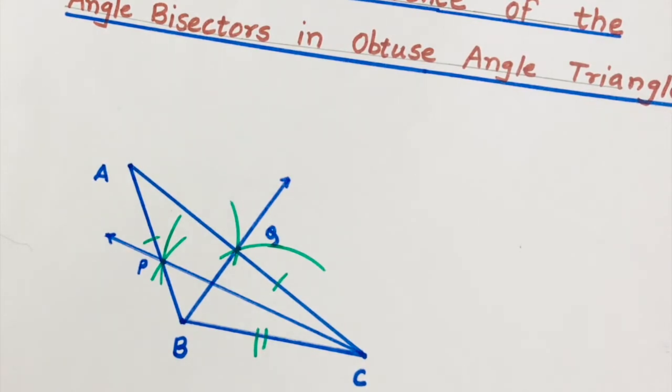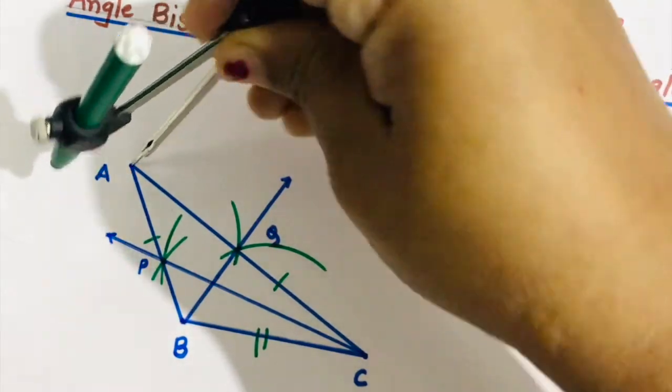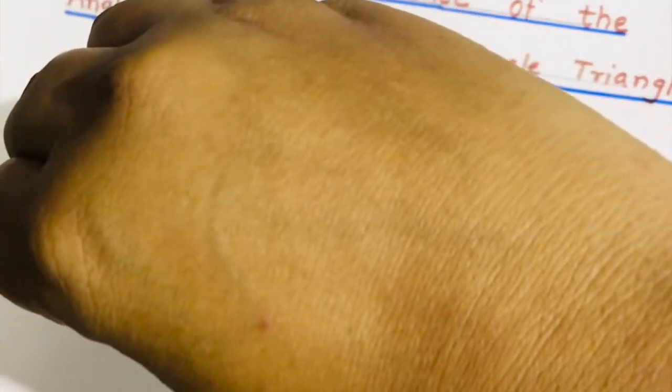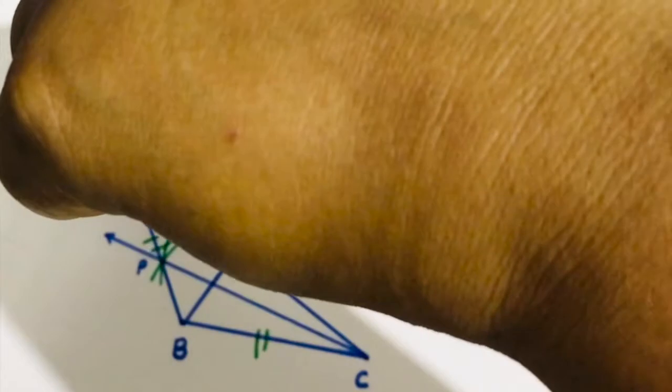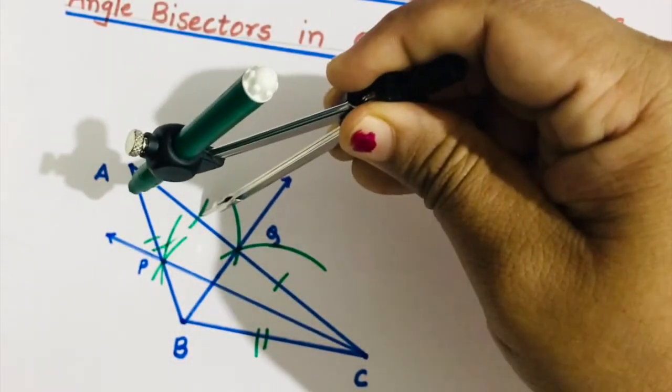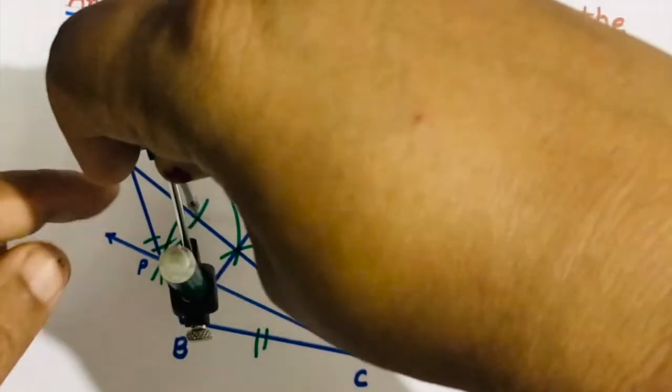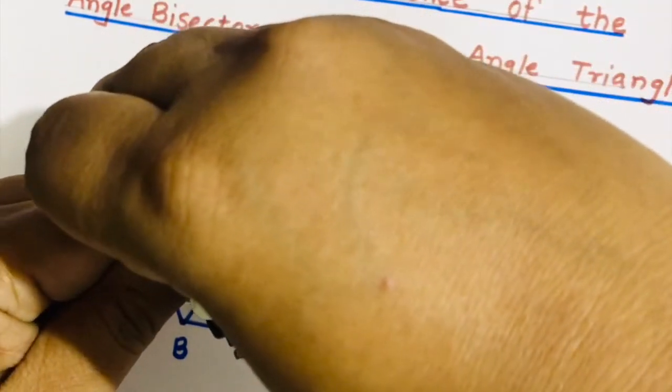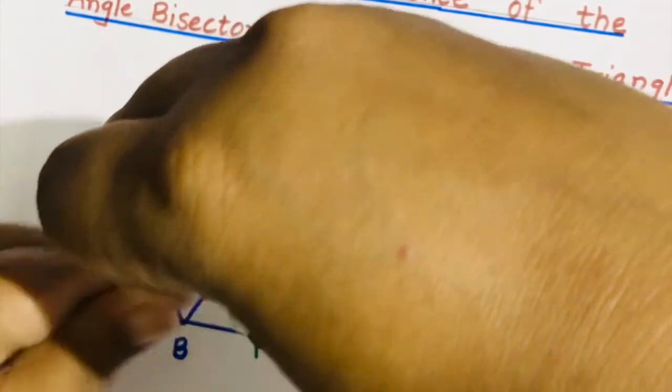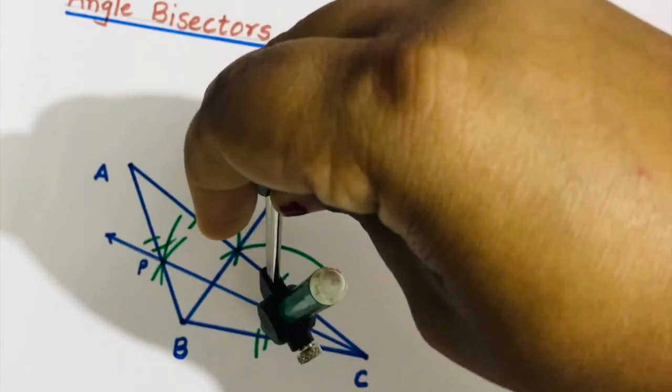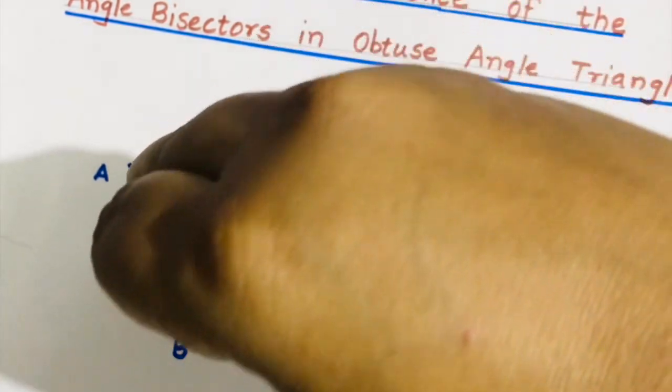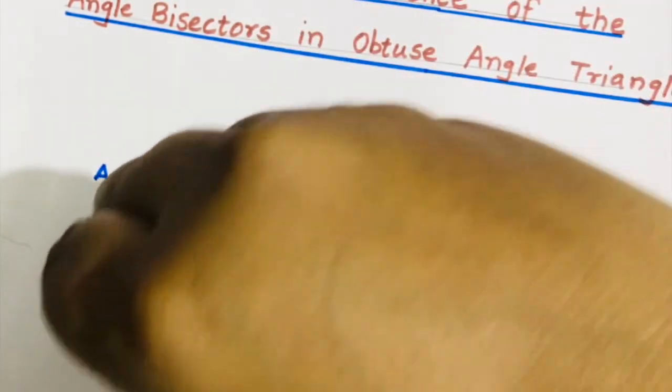Now we have to find out angle bisector of angle A. You can extend a little bit so that you will get arcs meeting far.